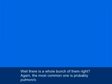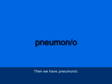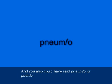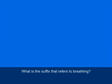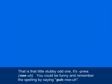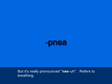There are several word parts for lung. The most common is pulmono — P-U-L-M-O-N slash O. Then we have pneumono — P-N-E-U-M-O-N slash O. You also could have said pneumo — P-N-E-U-M slash O — or pulmo — P-U-L-M slash O. What is the suffix that refers to breathing? That's the little stubby odd one: -pnea — hyphen P-N-E-A. It refers to breathing.